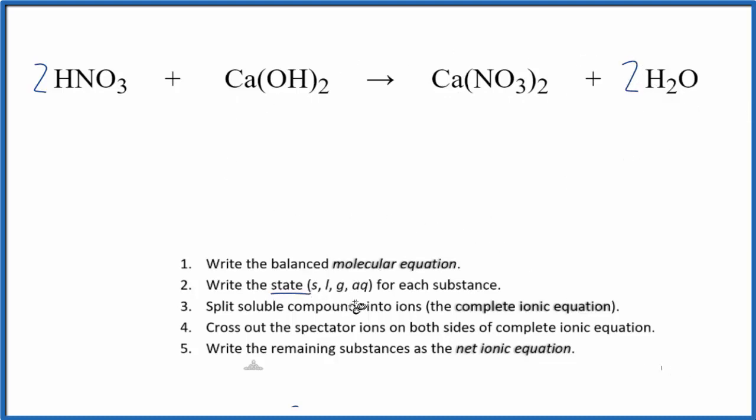Next, we need to write the state for each substance. Nitric acid is a strong acid that dissociates completely in water, so it'll be aqueous. Calcium hydroxide is a strong base that also dissociates completely in an aqueous solution. Nitrates are very soluble, and we have calcium nitrate here, so that's aqueous. Then we have water, which is a liquid.